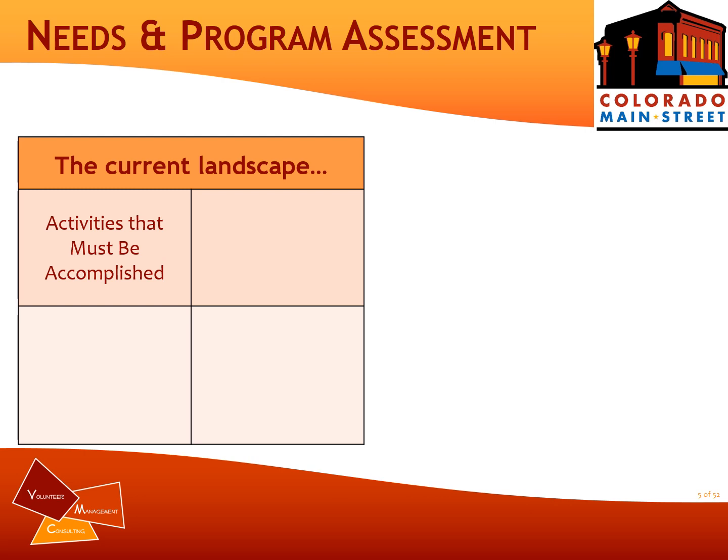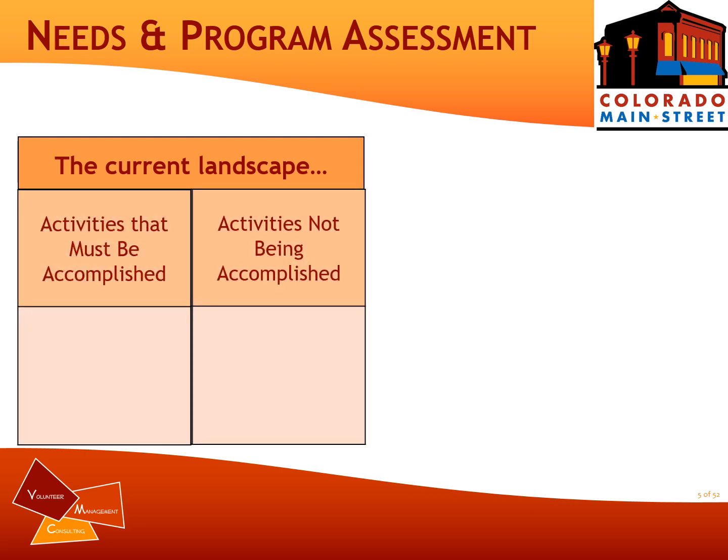We start with the current landscape and ask folks to list activities that must be accomplished. Within your Main Street community, what are things that need to get done on a daily, weekly, monthly, or annual basis? Next, we ask folks to list things that aren't getting done. Sometimes it's because there just aren't enough hours in the day or enough people to help with these projects — some things just don't get done on a regular basis.